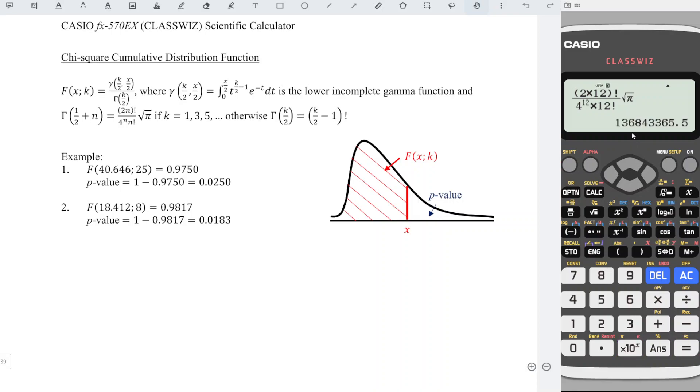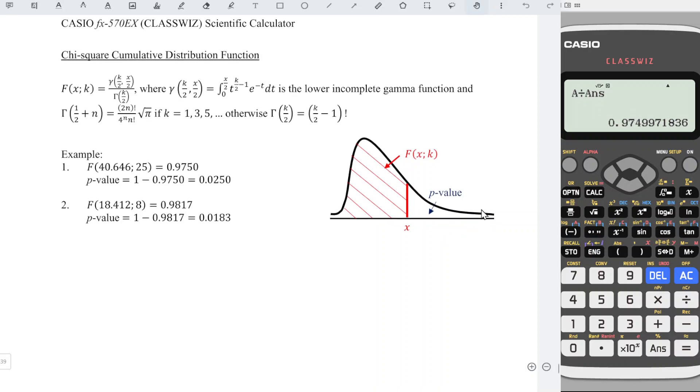And now we should take alphabet A divided by the answer that we just obtained. Press equal. We should obtain the less than cumulative distribution. What we need here is p-value which is the right-hand side, so what we have to do here is take one minus answer and we should obtain the p-value as we can see here.